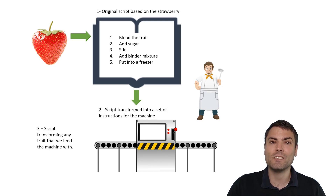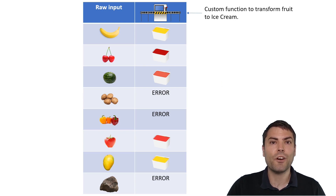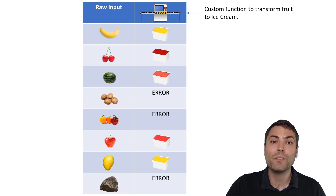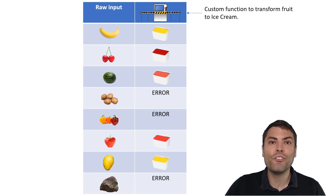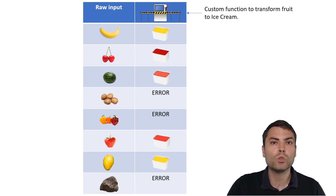Now any fruit that he feeds the machine with will get transformed into ice cream of the same flavor. If we consider fruit as tables and machines as a function, we can see that with this approach we can submit multiple different tables of a similar structure to the function, and the function will transform them into a new structure. We can also see what can happen if we feed the function with the wrong type of data — in our case, potatoes, peppers, and a rock. The function is unable to process those objects because they are not fruit upon which the function was created, and therefore the function will return an error.